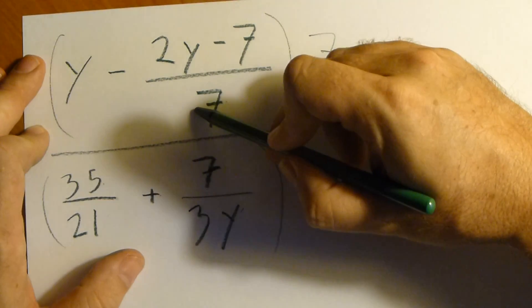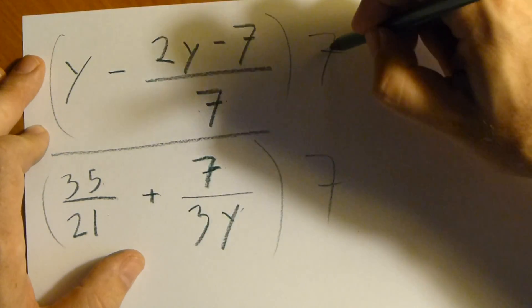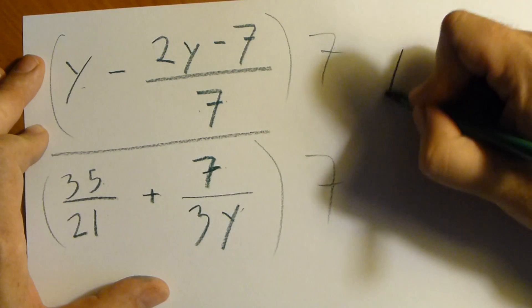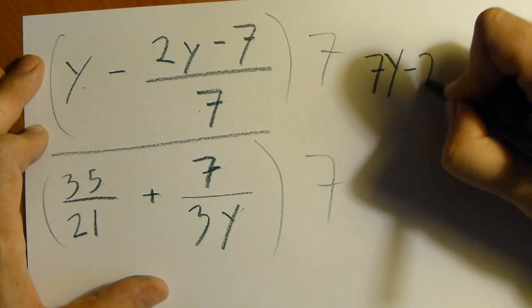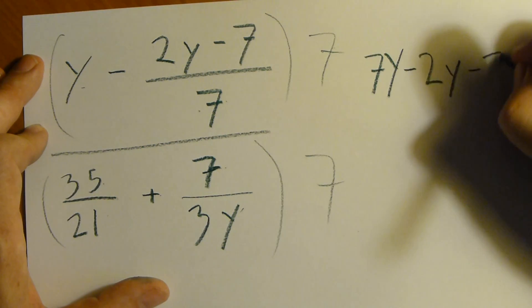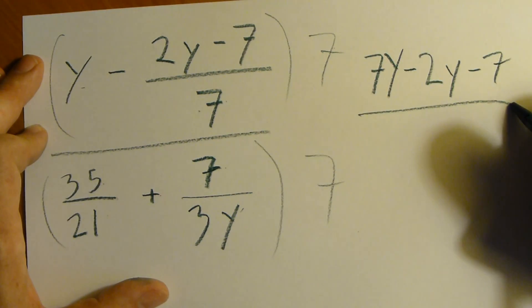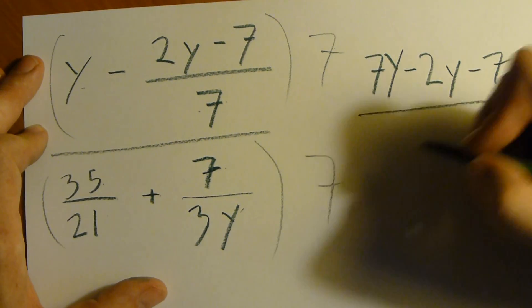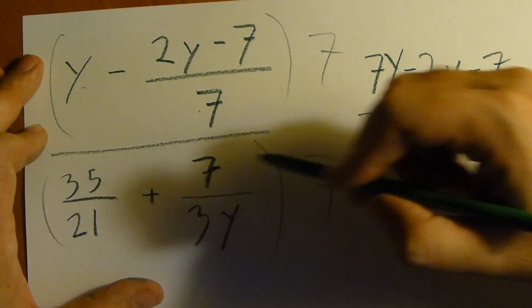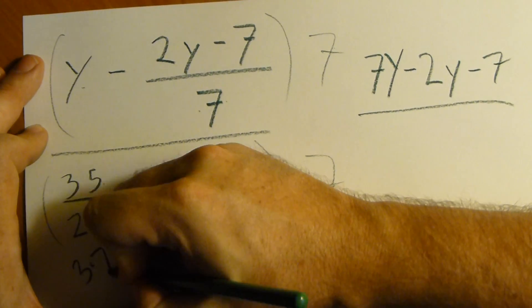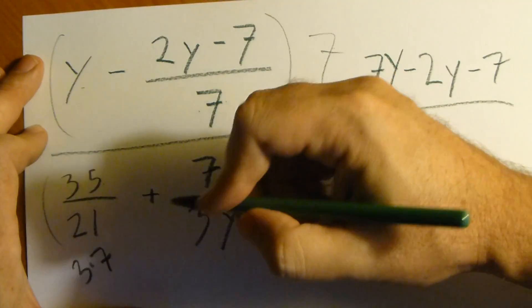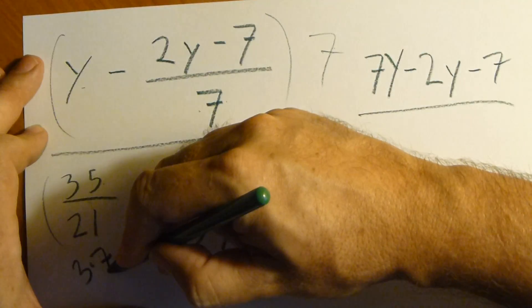The 7 over 7 will cancel out. We'll get 7 times y, which gives us 7y minus 2y minus 7 over, 7 down here. 21, that's 3 times 7. So we can cancel 7 on top, 7 on bottom.